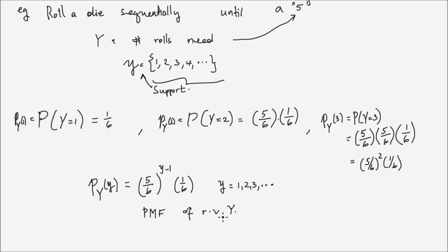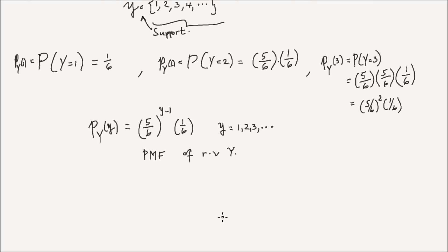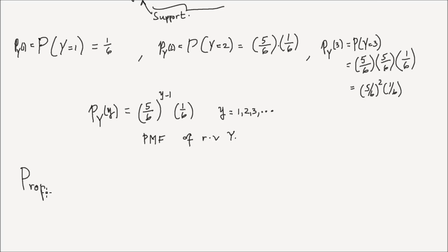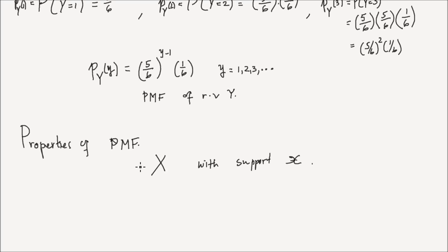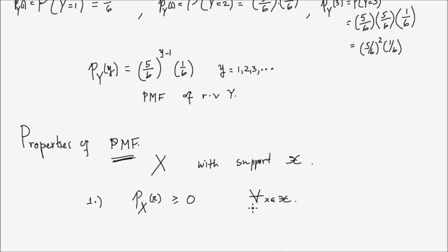Now that we have defined probability mass functions, or PMFs, what are some properties of PMFs? Let's say we have a random variable x with support script x. The first property that any probability mass function should satisfy is that the probability that x takes a value of little x, where little x is in the support, is greater than or equal to 0, for every value little x in the support of x. This symbol simply means 'for all.'